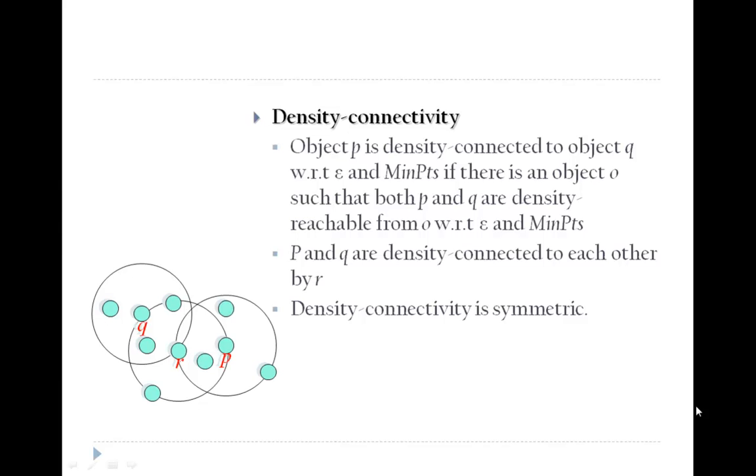Density connectivity: Object P is density connected to object Q with respect to epsilon and min points if there is an object O such that both P and Q are density reachable from O with respect to epsilon and min points.